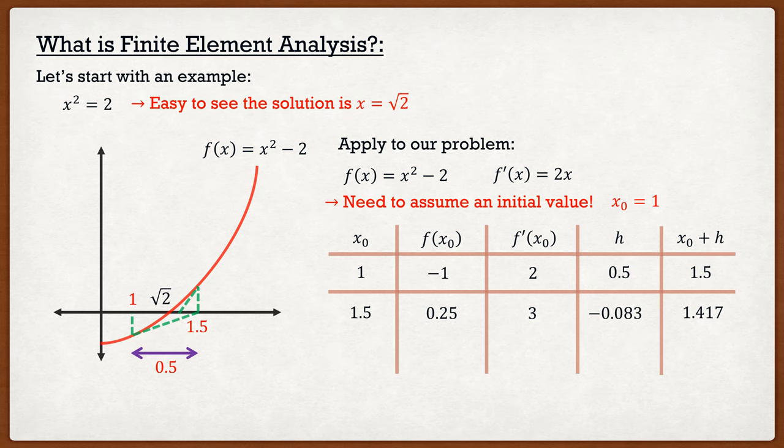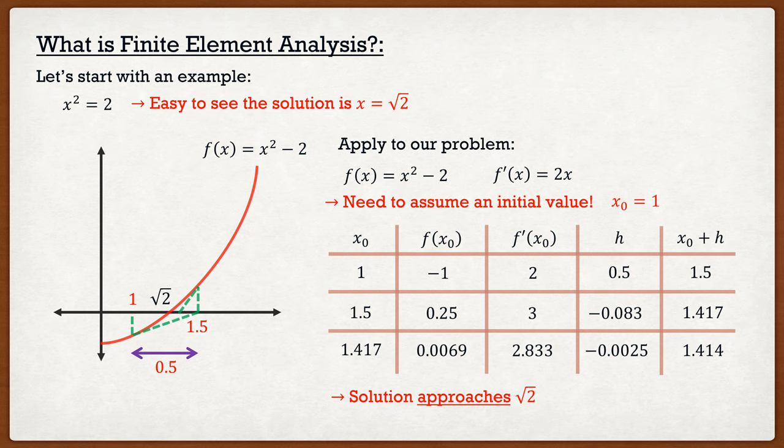Now, we say, well, you know what? I want it a little bit closer than that. So let's do another iteration. We're going to take our final answer from the previous iteration, make it our new initial guess. And from there, I get the value of 1.414, which is very, very close to √2. So therefore, we can see that our solution approaches √2.